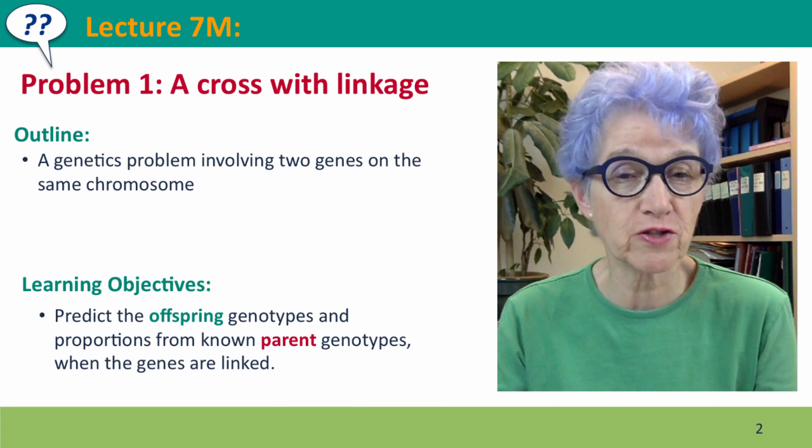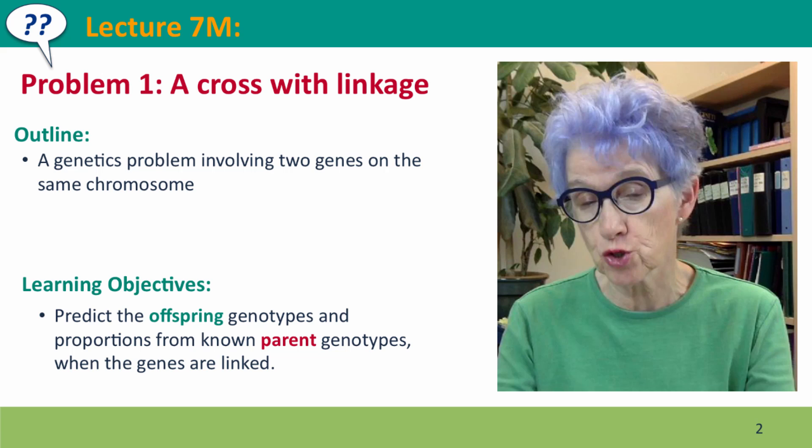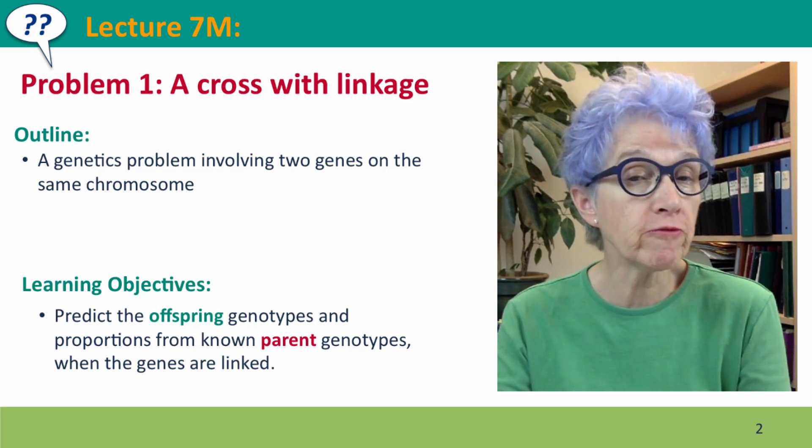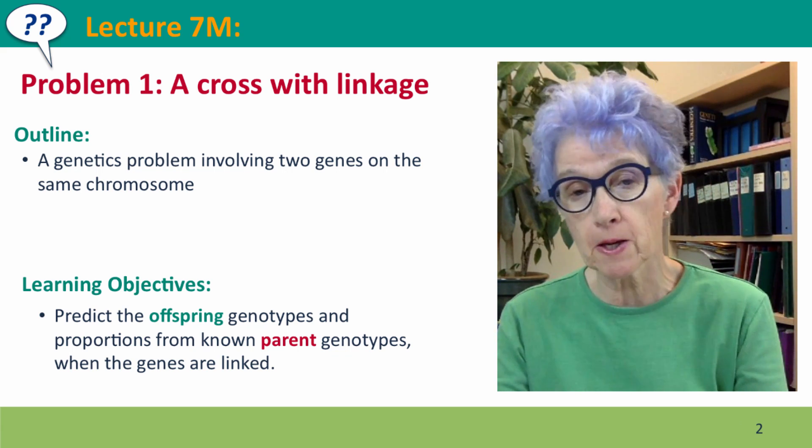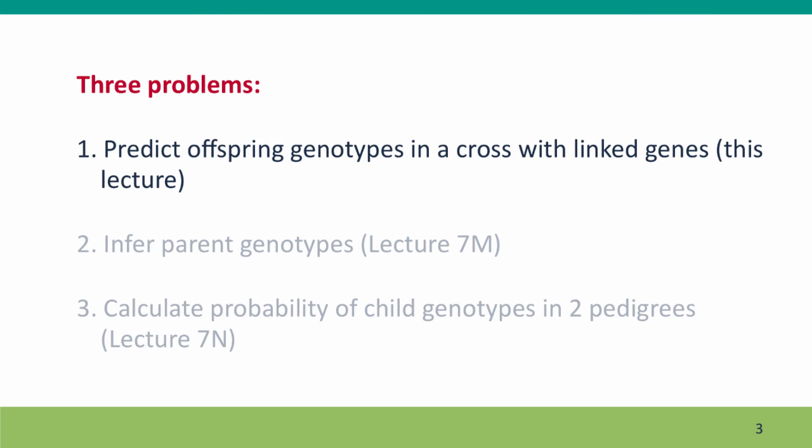Hi, everyone. Welcome back to Useful Genetics. This is Lecture 7M, the first of three lectures where we're going to work through three different problems involving a complete generation. Our first problem has us predicting the offspring genotypes in a cross where we're considering two linked genes, so we have to consider the effects of crossing over.